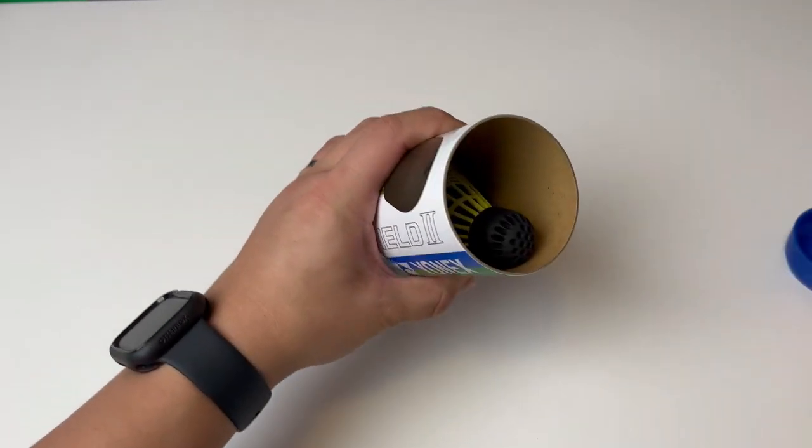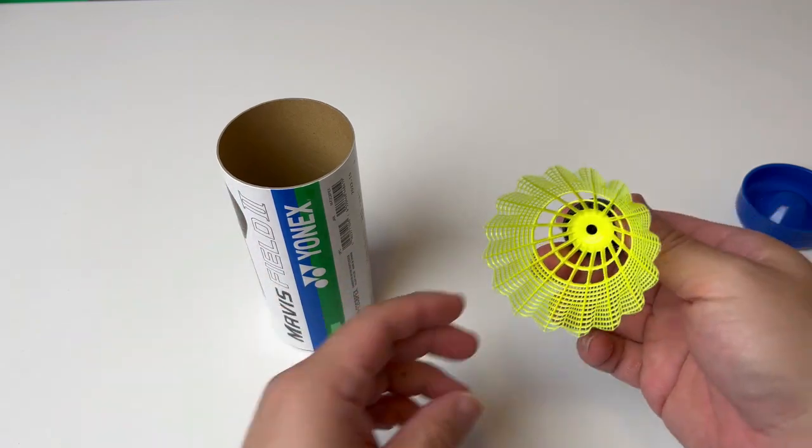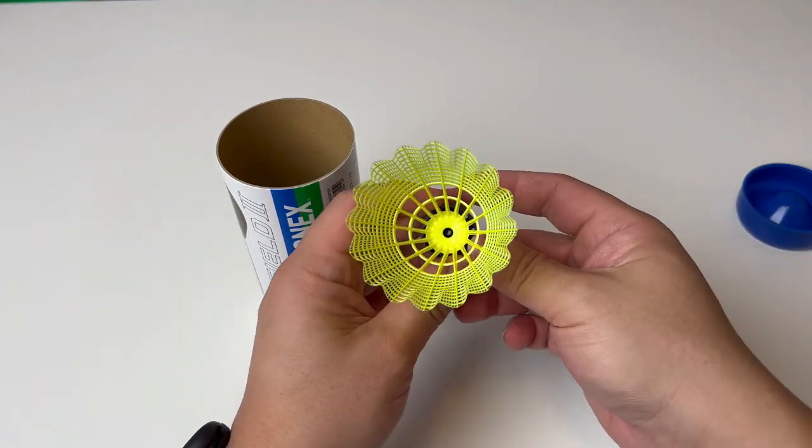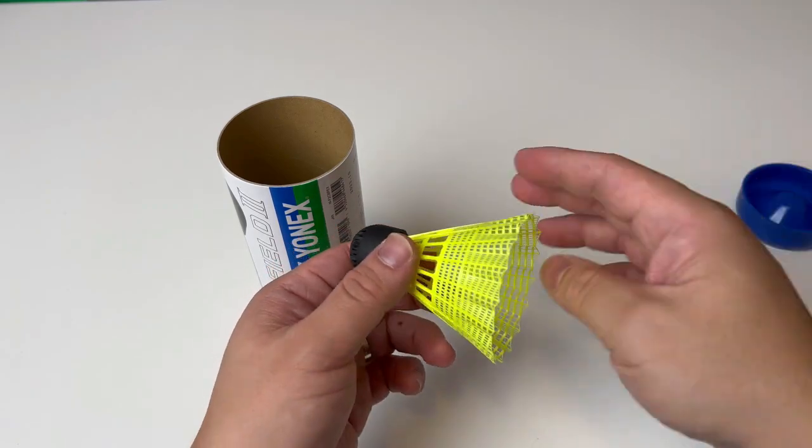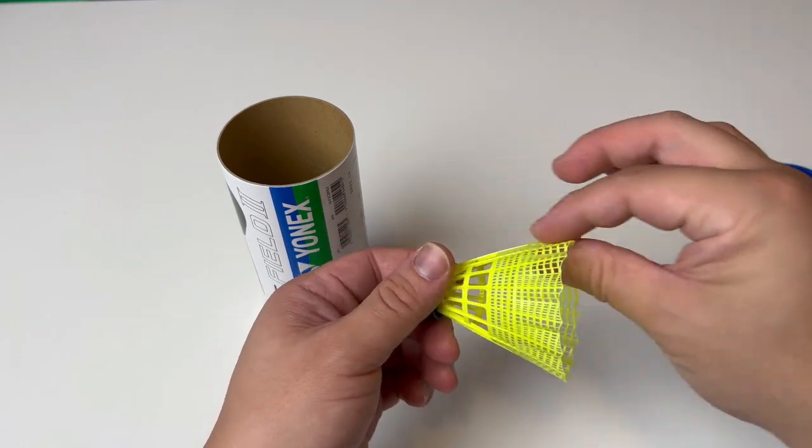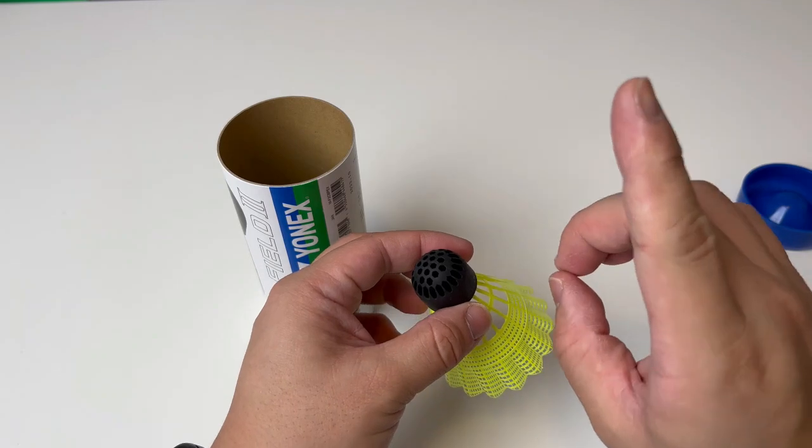But if I flip it, it tells a very different story, right? Very interesting design. The back part of the nylon shuttle obviously looks the same as most of the other Mavis's, but the tip part is what's interesting to me.